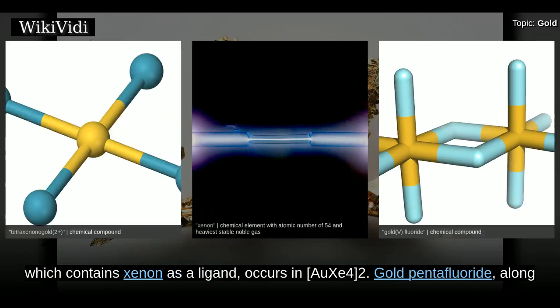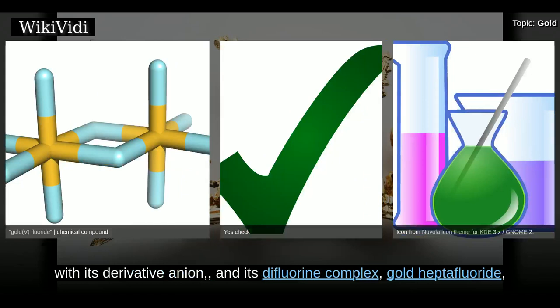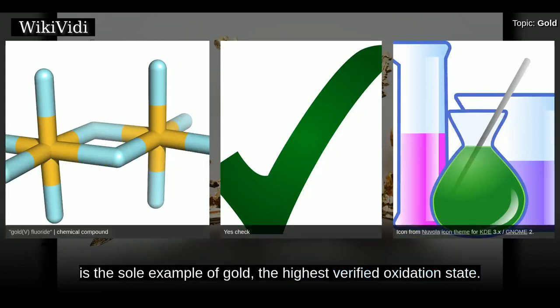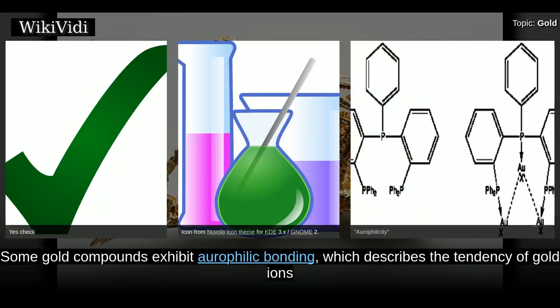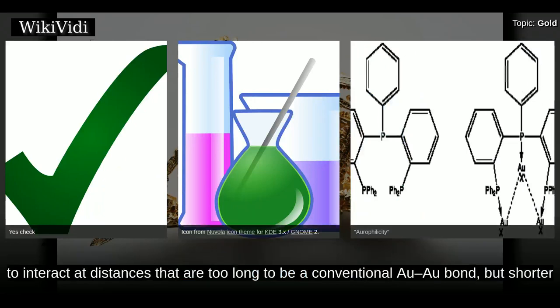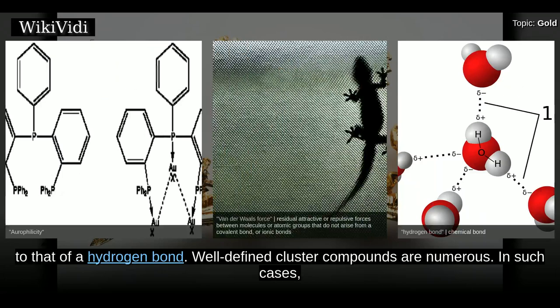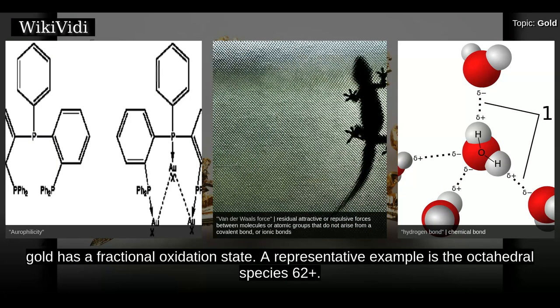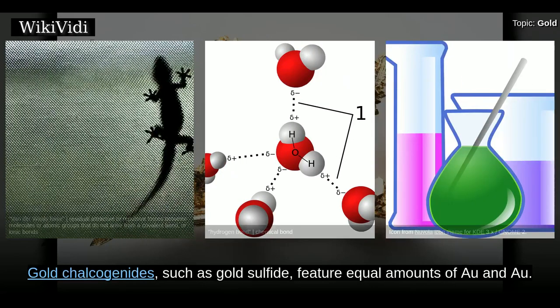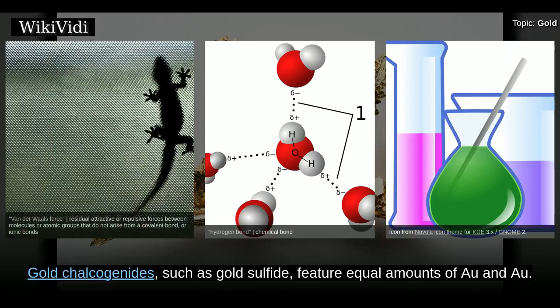Gold pentafluoride, along with its derivative anion and its difluorine complex, and gold heptafluoride, is the sole example of gold in the highest verified oxidation state. Some gold compounds exhibit aurophilic bonding, which describes the tendency of gold ions to interact at distances too long to be a conventional Au–Au bond but shorter than van der Waals bonding. The interaction is estimated to be comparable in strength to that of a hydrogen bond. Well-defined cluster compounds are numerous; in such cases gold has a fractional oxidation state. A representative example is the octahedral species Au6(2−). Gold chalcogenides such as gold sulfide feature equal amounts of Au+ and Au3+.